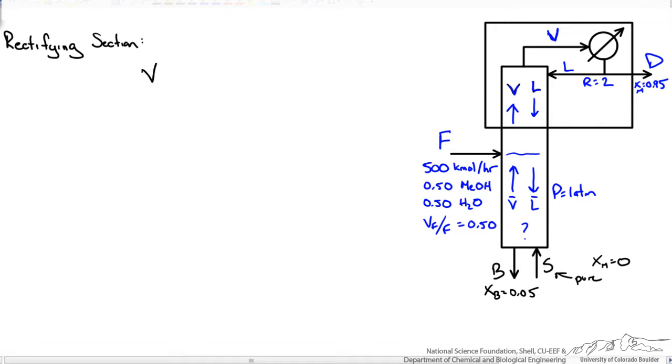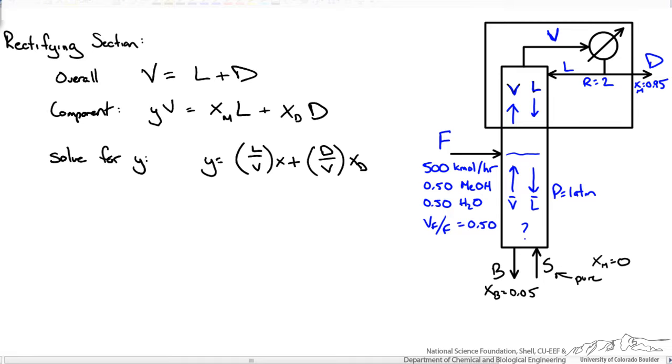A good place to start would be the rectifying section which would include that top section above our feed. We could write an overall material balance where we have our vapor flow rate equaling our liquid flow rate within the column plus whatever leaves as distillate. We could also write a component balance for methanol. We could solve for y because we want to be able to plot it on our McCabe-Thiele diagram, the yx diagram, and we get the following for our operating line.